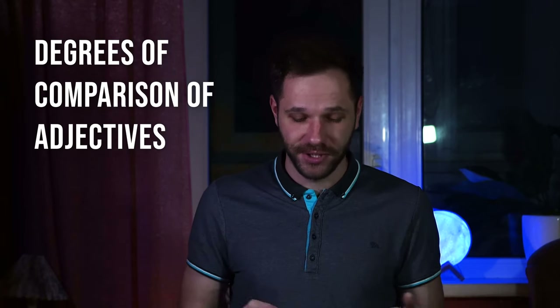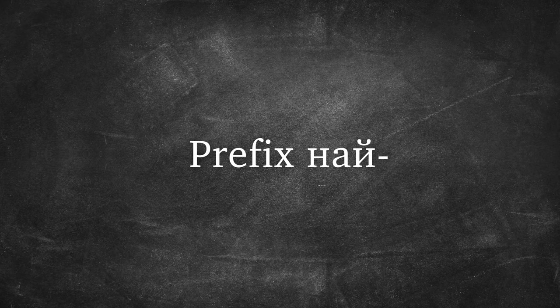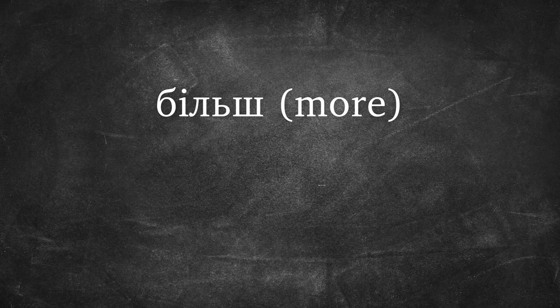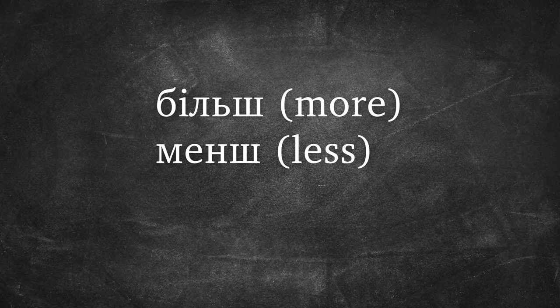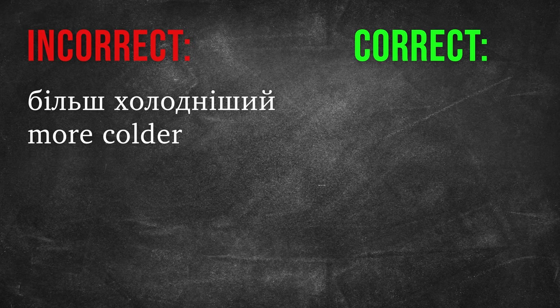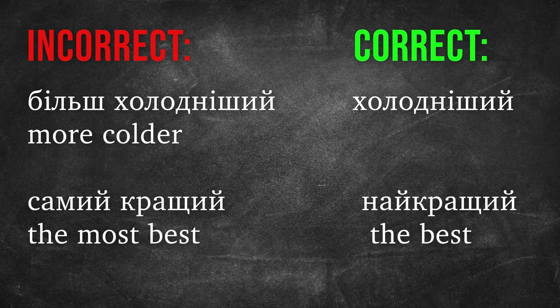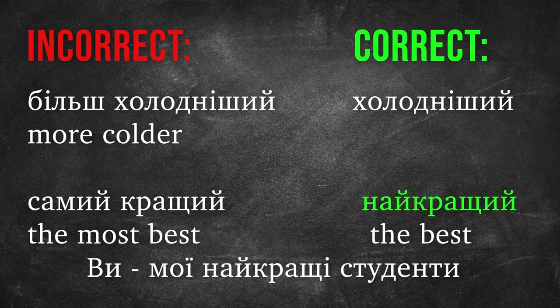Ukrainians are often confused about degrees of comparison of adjectives. The prefix «НАЙ» is used to express the highest degree of comparison. It is a mistake to add «більш» or «менш» to the simple comparative form. For example: «Більш холодніший» is wrong — say «Холодніший». «Самий кращий» — in Russian «Самый лучший» — is wrong. In Ukrainian it is «Найкращий». For example: «Ви мої найкращі студенти.»